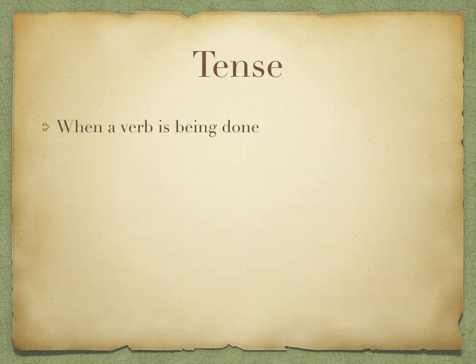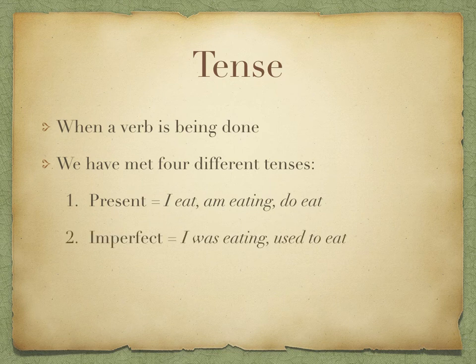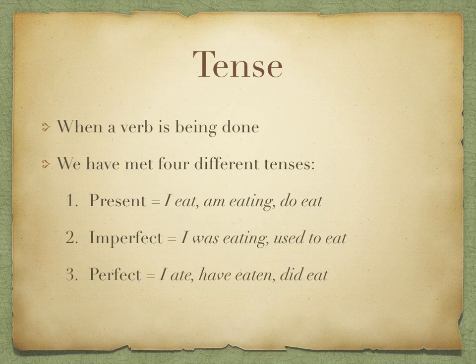Finally, we have tense, which tells us when a verb is being done. In year 10, we've met four different tenses. The first is the present, which means an action that is happening now. The second is the imperfect, which refers to an ongoing, repeated, or habitual action in the past. The perfect is a completed or one-off action in the past. And the pluperfect refers to something that takes place further back in the past than the perfect.